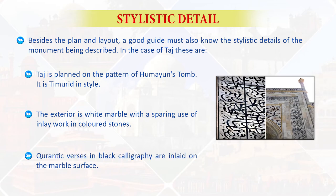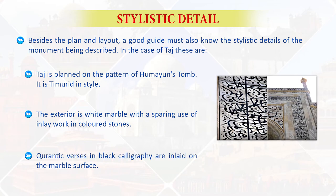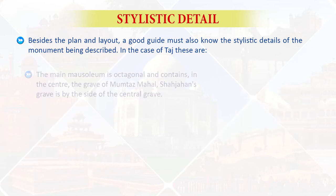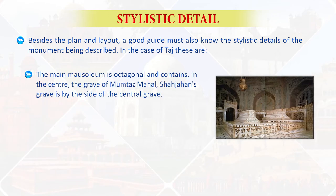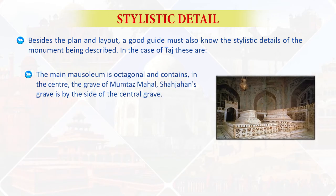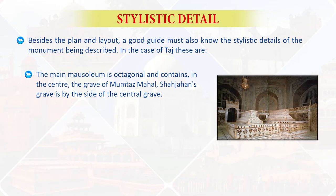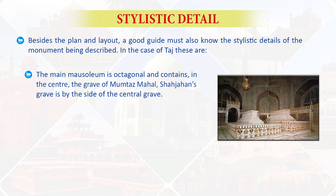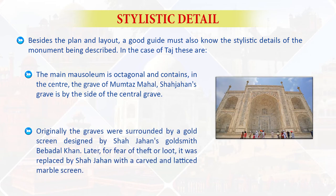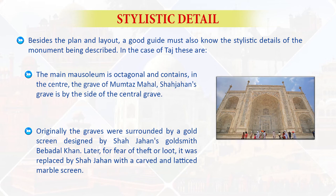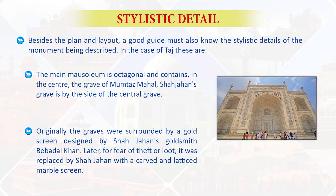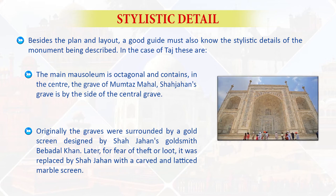Quranic verses in black calligraphy are inlaid on the marble surface. The main mausoleum is octagonal and contains in the center the grave of Mumtaz Mahal. Shah Jahan's grave is by the side of the central grave. Originally, the graves were surrounded by a golden screen designed by Shah Jahan's goldsmith Bebadal Khan. Later, for fear of theft or looting, it was replaced by Shah Jahan with a carved and latticed marble screen.